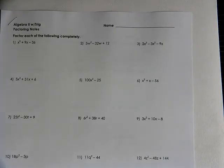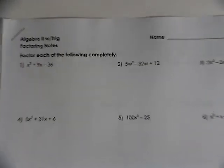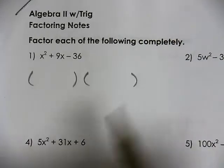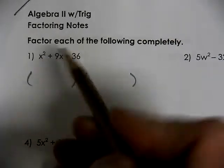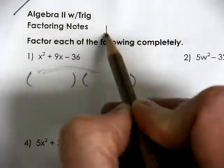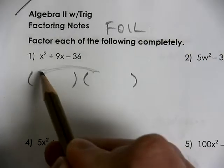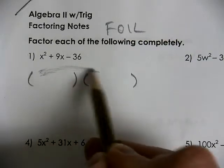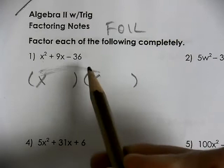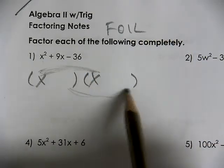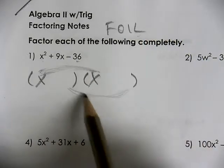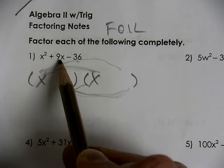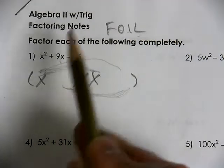Here we have a group of factoring questions. Looking at our first one, it's pretty straightforward. Guess and check is more than acceptable since we have a value of x in front. We know our first two terms. If you think of FOIL, that tells you how you multiply two binomials together to produce the trinomial. The F refers to multiplying the fronts together — what makes x squared? That would be x and x. Then you need two numbers to multiply to be 36 — that's your last terms. But in the middle, the outer and inner have to produce 9.